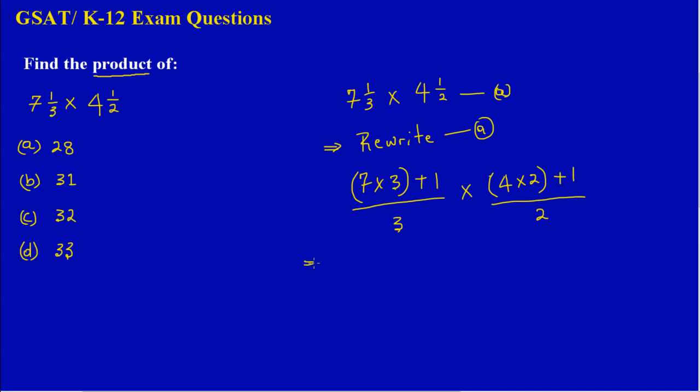Now quickly let's calculate that. I'm going to say 7 times 3 will give me 21, so that is 21 plus 1, and I'm going to place that all over 3. And I'm multiplying by 4 times 2 will give me 8, and I'm adding 1 to that, putting that all over 2.